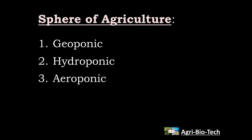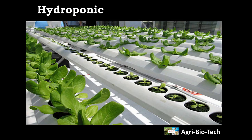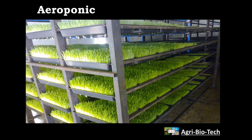Geoponic is the cultivation in earth. You can see it normally everywhere on earth. It is normal farming. Hydroponic is cultivation in water. In this cultivation, plants or crops are grown in water or water replace. And the third one is aeroponic. Aeroponic is cultivation in air. In this cultivation, crops are grown in air without use of soil.